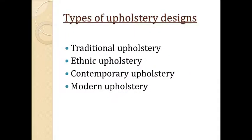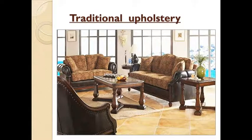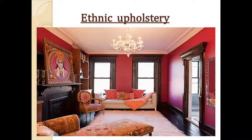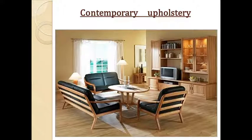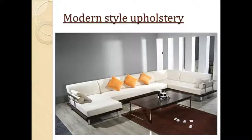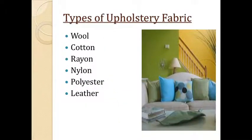Moving to upholstery design, there are four ways to categorize design styles: traditional upholstery design, ethnic upholstery design, contemporary upholstery design, and modern upholstery design. Pictures are shown to give a clear idea of what kinds of designs are used in each style. That's it for today — we'll talk about types of upholstery fabric in the next video. Thank you.